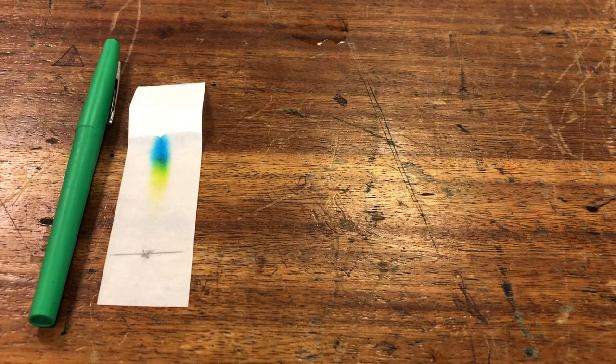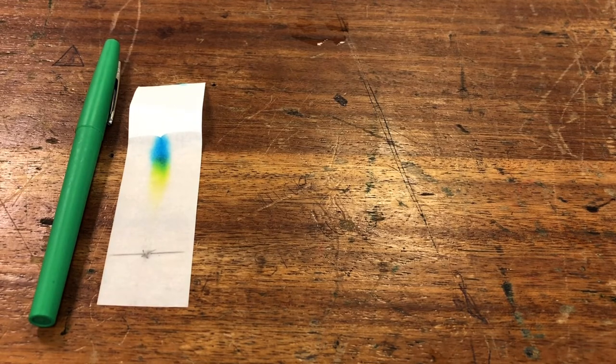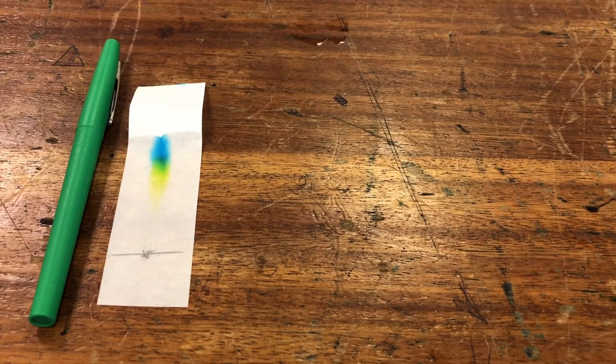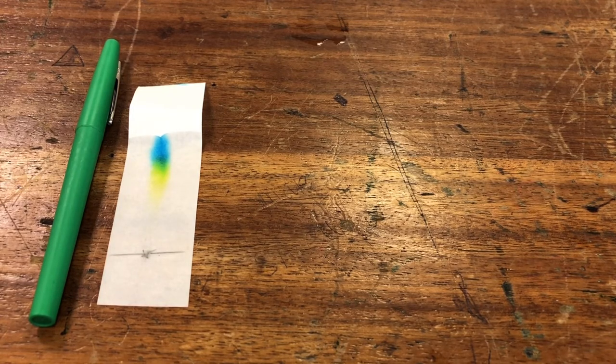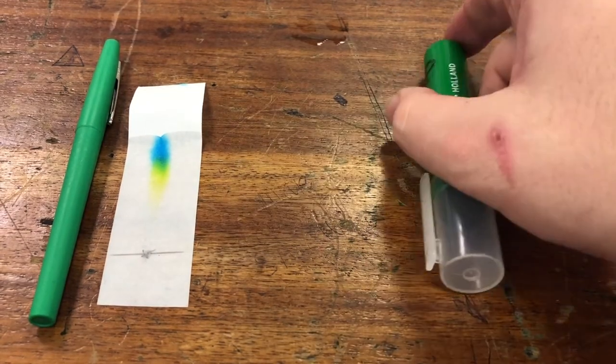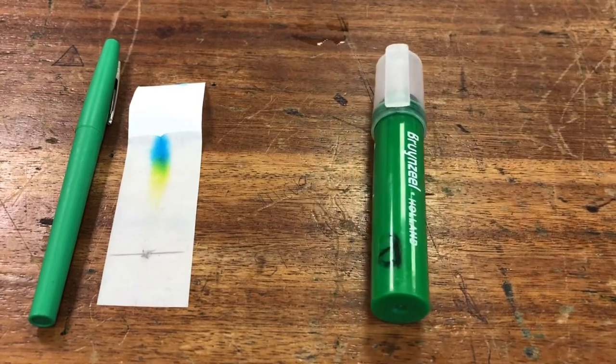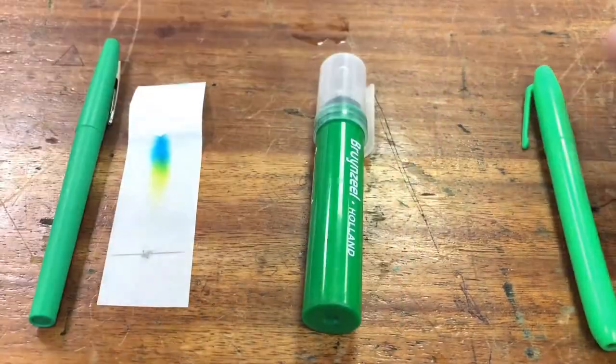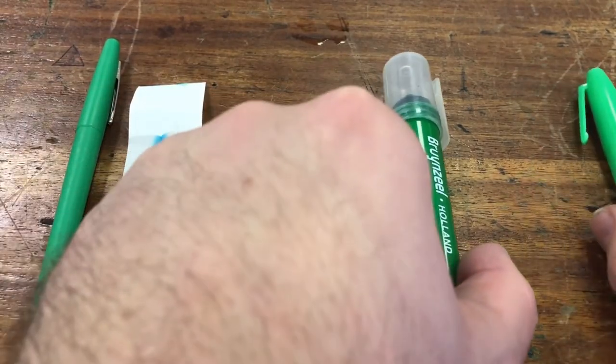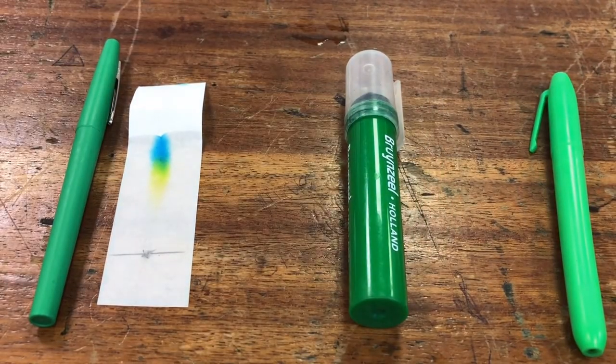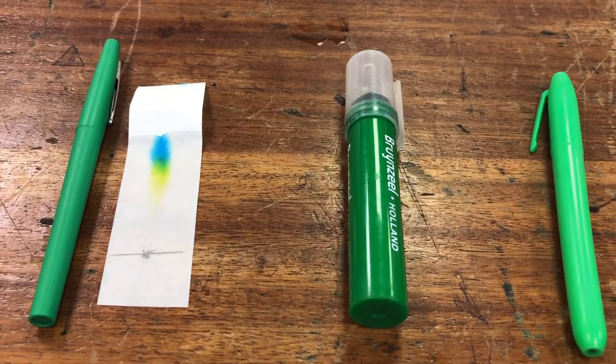One of the useful things about chromatography is that you can use it to analyze things, to work out what they're made of, and to compare substances. So what I did off camera is I actually, as well as making a chromatogram for this green pen, I made a chromatogram for this green pen and this green pen as well. So I wanted to compare the ink in each of these green pens.